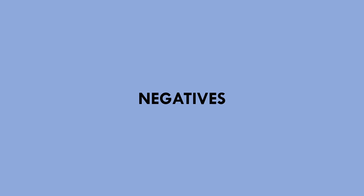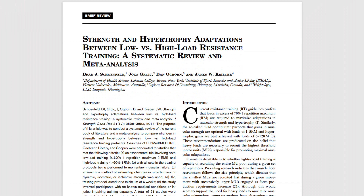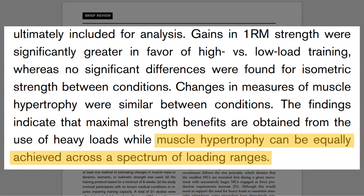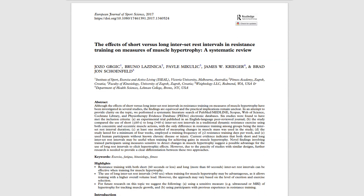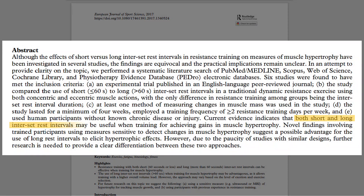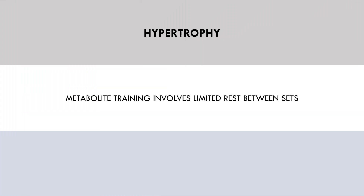Let's start with the negatives. There is really only one major negative: metabolite style training probably doesn't induce as much muscle growth on a per set basis compared with traditional training. This meta-analysis found that hypertrophy can be equally achieved across a spectrum of different rep ranges and loads, provided sets are taken close to failure. However, this systematic review found no significant difference when training with different rest periods, although there was a slight trend in favor of longer rest periods — so metabolite training's shorter rest periods may limit hypertrophy outcome slightly.